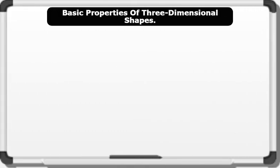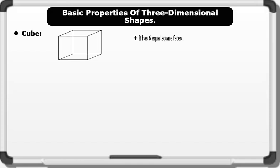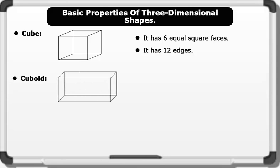Let's see the basic properties of some three-dimensional shapes. One, the cube: properties of a cube include it has six equal square faces and it has 12 edges. Two, the cuboid: properties of a cuboid include it has equal opposite faces, it has six rectangular faces, and it has 12 edges.